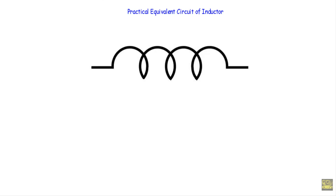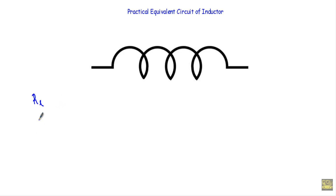In this video I will talk about the practical equivalent circuit of an inductor. Inductors are not ideal. Associated with every inductor there is a resistance RL equal to the resistance of the turns, and stray capacitance due to the capacitance between the turns of the coil. We express the stray capacitance with C and the resistance between the turns with RL.